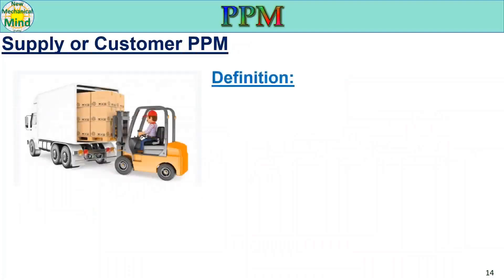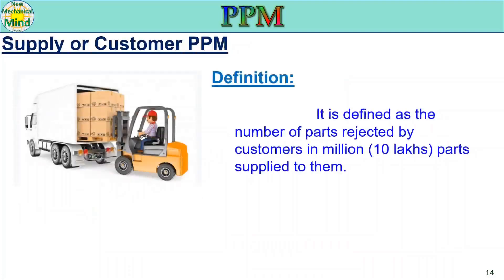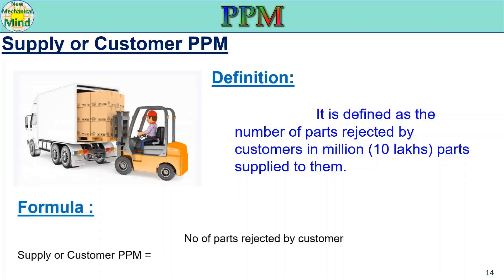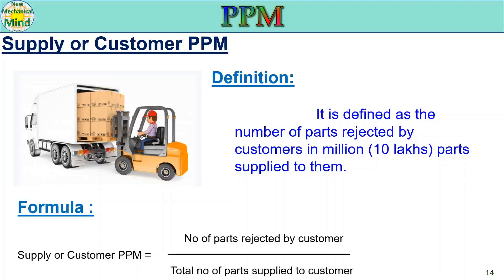Supply or customer PPM definition: it is defined as the number of parts rejected by customers in 1 million (10 lakh) parts supplied to them. The formula is: Customer PPM = (Number of parts rejected by customer ÷ Total number of parts supplied to customer) × 10 lakhs.